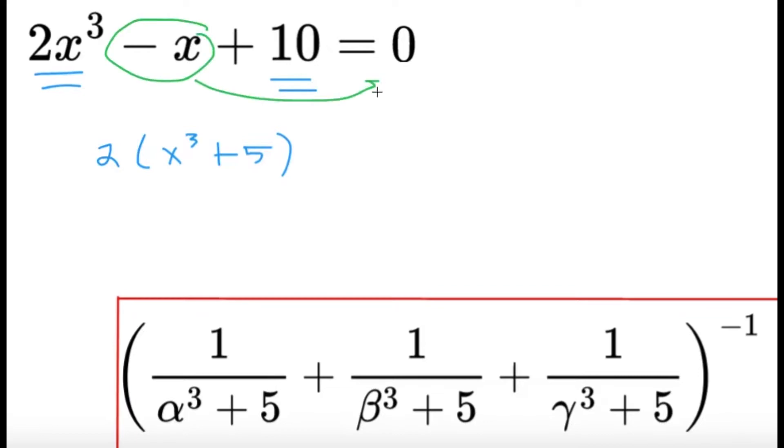So apparently if I move the x to the other side, I'll have the following relationship: 2 times x cubed plus 5 will be equal to x, and then dividing both sides by 2, x cubed plus 5 is equal to x divided by 2. So I think 1 over alpha cubed plus 5, 1 over beta cubed plus 5, 1 over gamma cubed plus 5,